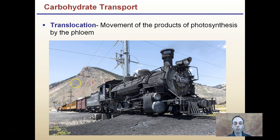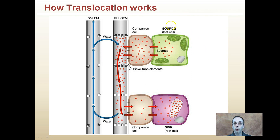How translocation works: we have our source leaf producing sucrose. Companion cells are loading it into the phloem within our sieve tube elements, and then it is transported and moves towards a sink cell, where companion cells pick up those sucrose molecules and add them to the sink cell. When we increase our concentration of sugar, water will move across, and when we decrease our concentration of sugar, water will move back to the xylem.